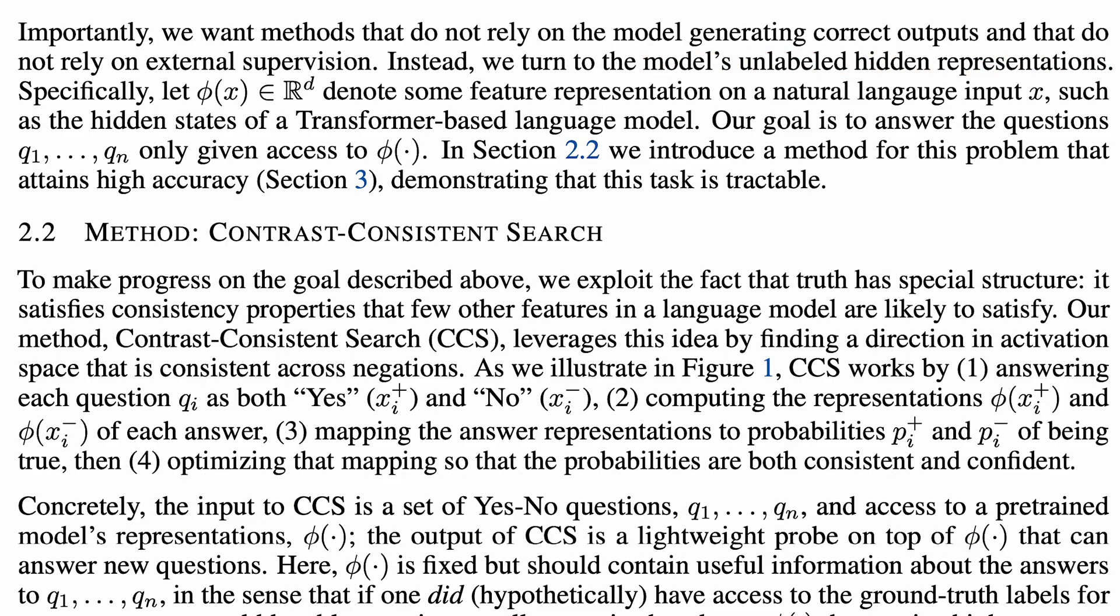The approach they are going to take is to use the model's unlabeled hidden representations. We'll need some notation here. We'll let phi x in r to the d represent some feature corresponding to a text input x. Like, for example, the hidden states of a transformer-based language model. Then the goal is to answer the questions when only given access to the features. Let's look at the method.